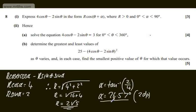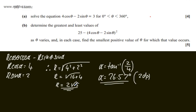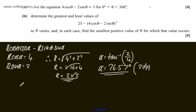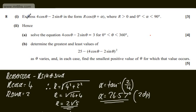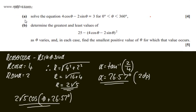So that gives us α. Putting this back together, we can say that 4cosθ minus 2sinθ can be written as 2root5·cos(θ + 26.57°).